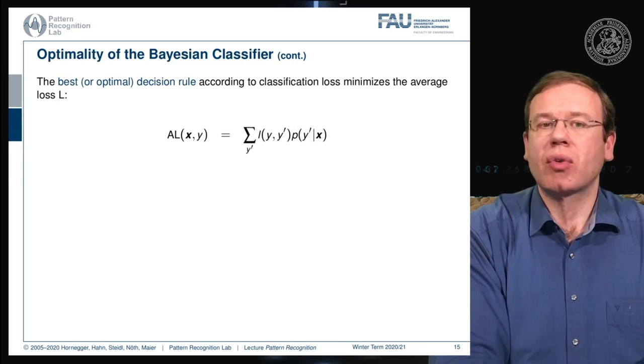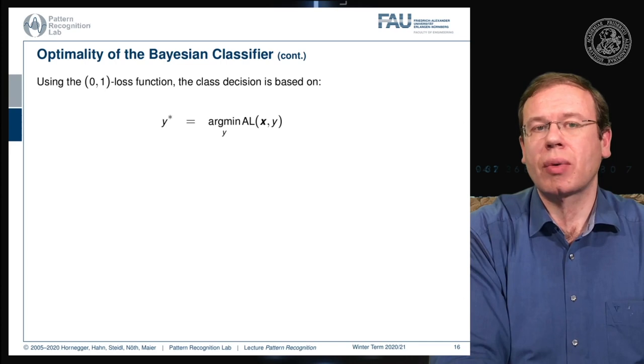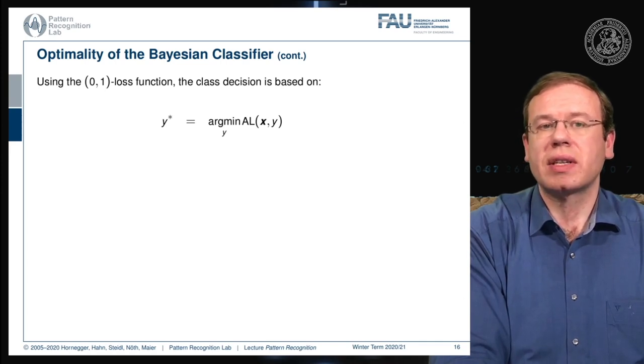Now we want to decide for this observation, which means we want to minimize the average loss with respect to the classes. This is essentially a minimization of our average loss over the classes. So we can now plug in the original definition of our average loss.